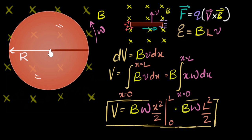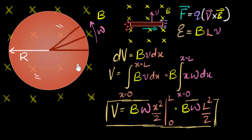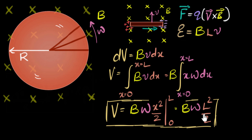If I choose another radial piece anywhere on the disk, that piece is also spinning the same way and should have the same potential difference. Dividing the entire disk into tiny radial pieces, each piece has exactly the same potential difference. So the answer to the original question — the potential difference between the center and the edge of the disk — is B·omega·R²/2, regardless of which radial path you choose.